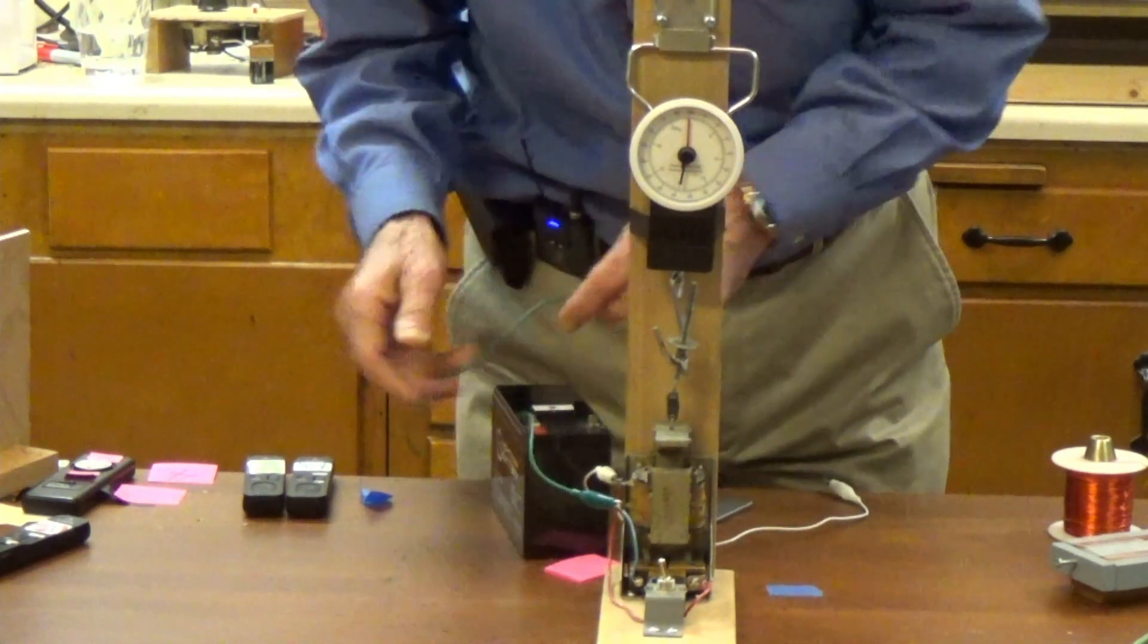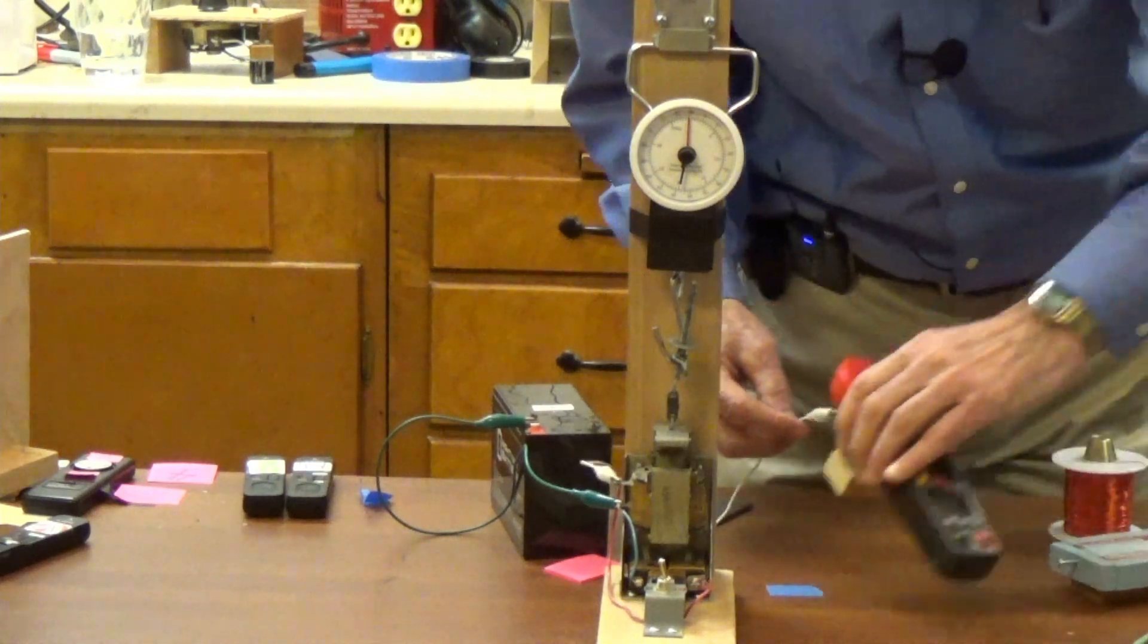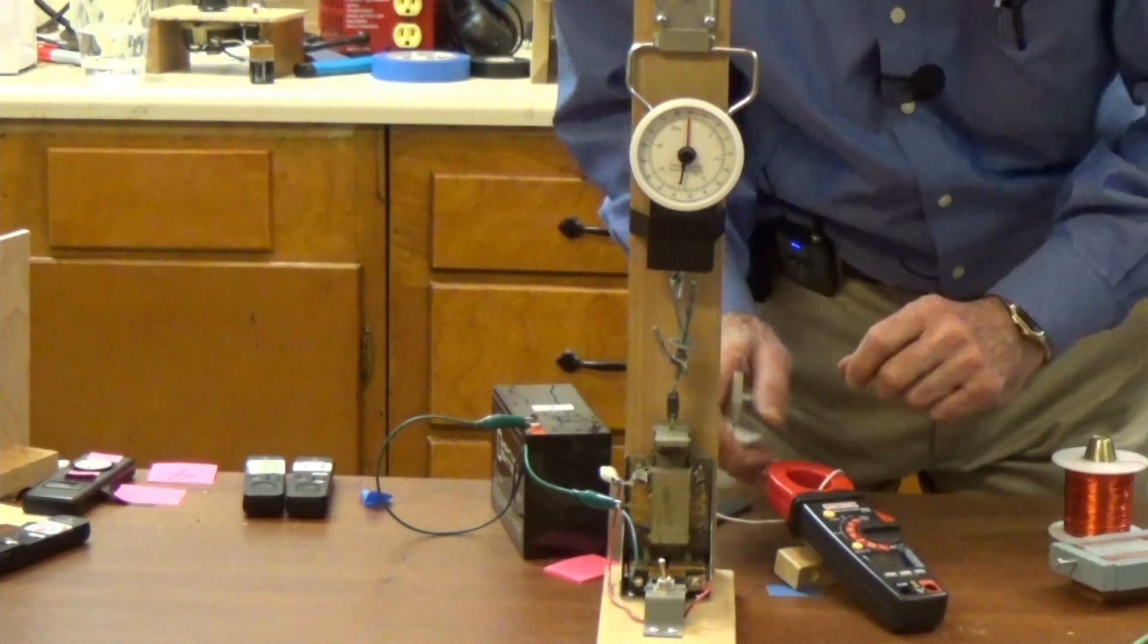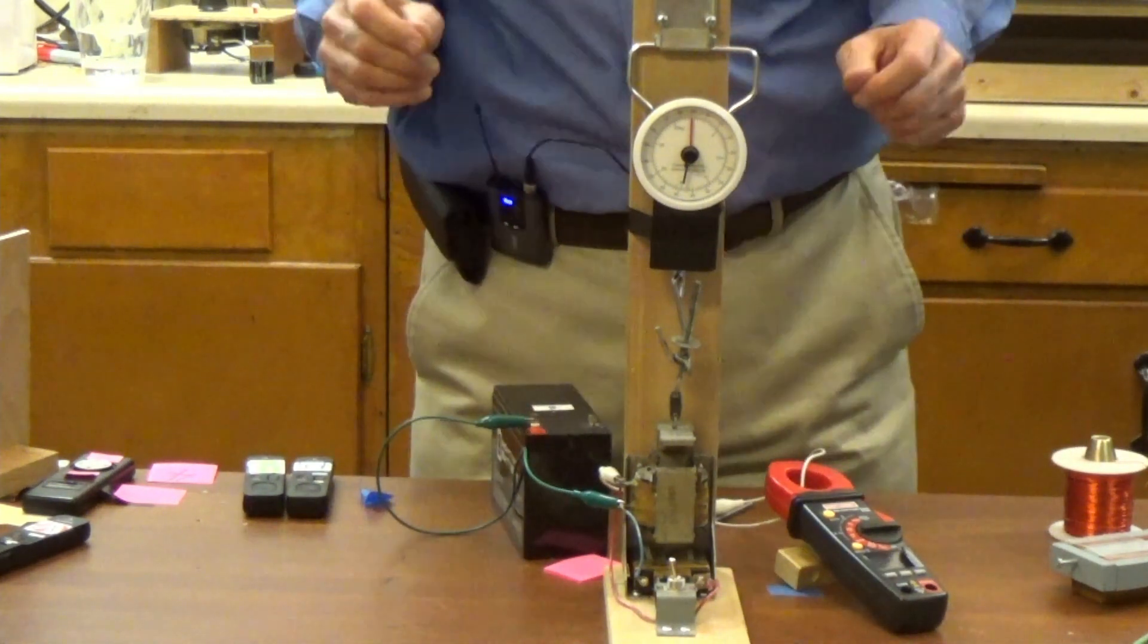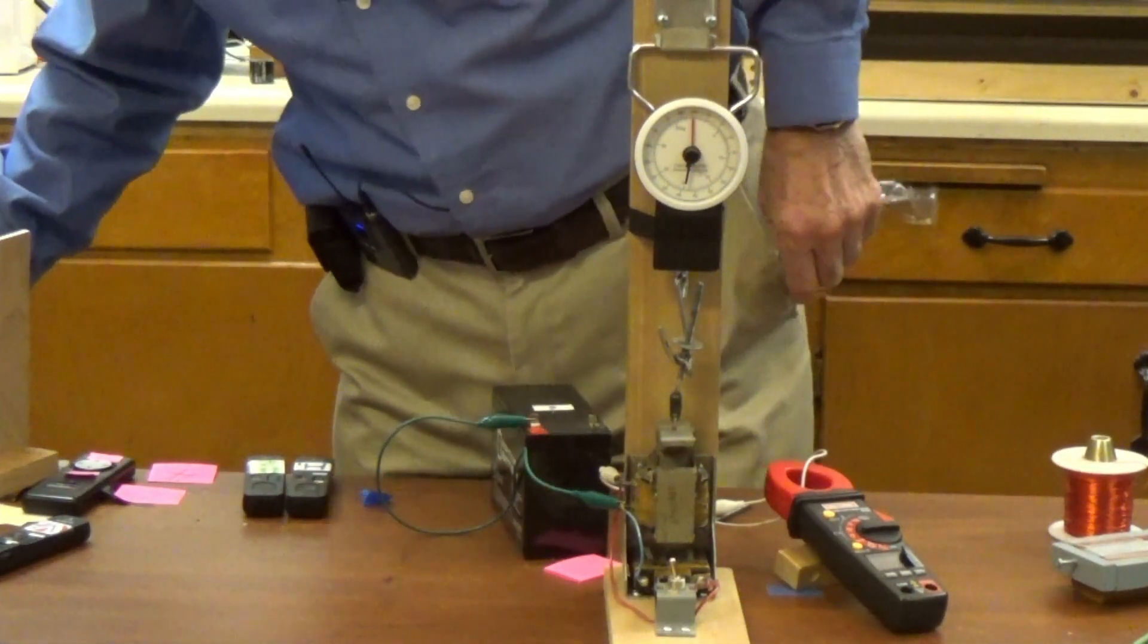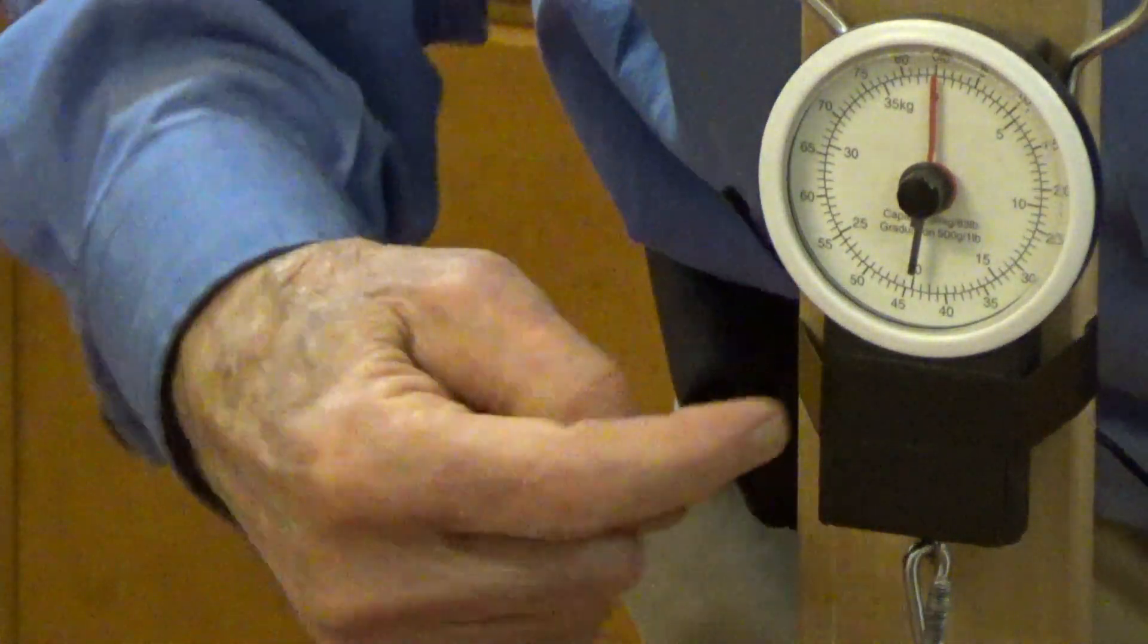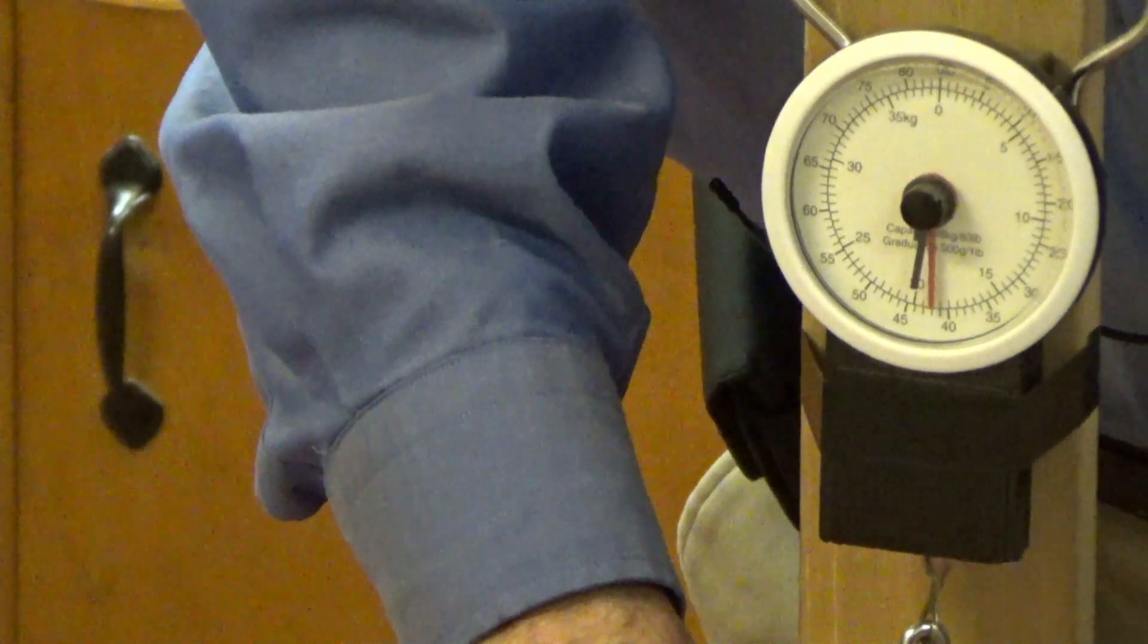So let's get the battery ready for this and while we're doing it we're going to measure how much electricity we're using. Now before we do anything I want to show you how much force it takes to hold this down all the way. Let's take a look at the gauge. We're looking at the outer numbers here. Those are in pounds and to hold this down all the way takes about 43 pounds.